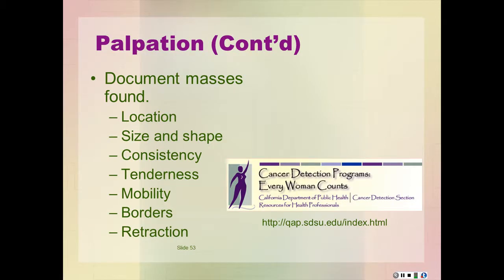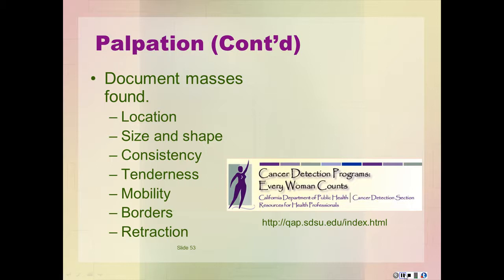If a breast mass is felt, characterize it by its location, size, shape, consistency, tenderness, mobility, delineation of borders, and retraction. Transillumination can be used to confirm the presence of fluid in certain masses. These characteristics are not diagnostic by themselves, but in conjunction with a thorough history, they can provide a good deal of clinical information that can be correlated to findings from diagnostic tests.